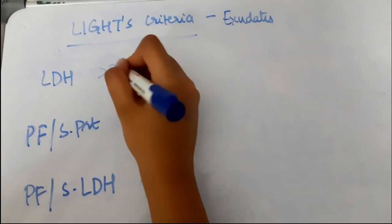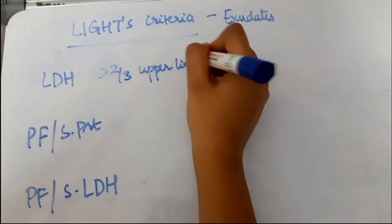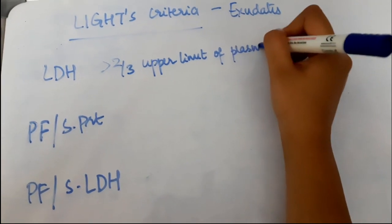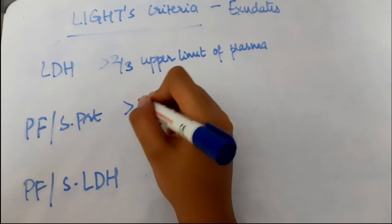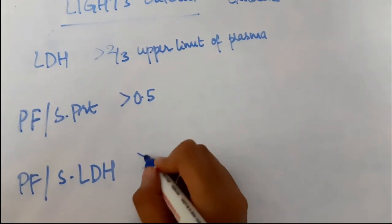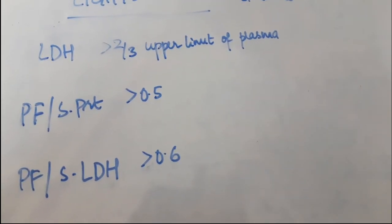If the amount of LDH in the pleural fluid is more than two-thirds of the upper limit of plasma, if the pleural fluid protein and serum protein ratio is more than 0.5, and if the pleural fluid LDH by serum LDH ratio is more than 0.6, it means that the fluid is an exudate.